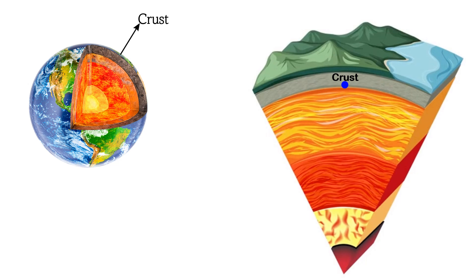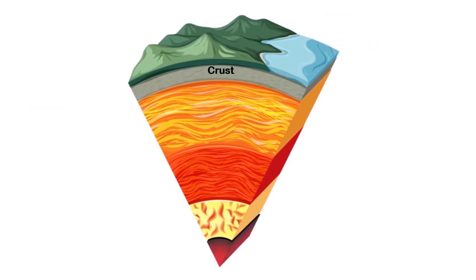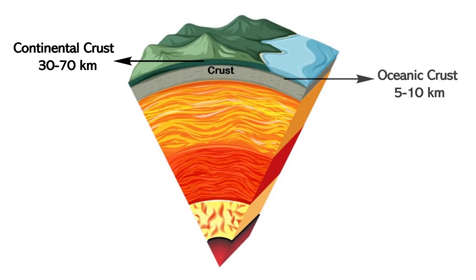Let's start with the outermost layer of the Earth — the crust. Earth's crust has an average thickness of about 5 to 70 kilometers and is relatively thin compared to the other layers. There are two types of crust. The first is continental crust, which is thicker at about 30 to 70 kilometers. It makes up the land on Earth, is less dense, and is mostly made up of the rock granite.